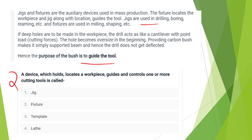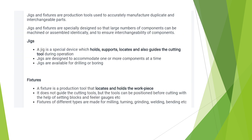The device which holds, locates the workpiece, and guides and controls one or more cutting tools is called a jig or fixture. These are production tools used to accurately produce duplicate and interchangeable parts. They are designed to hold large components and should be assembled to hold, support, locate, and guide the cutting tool.